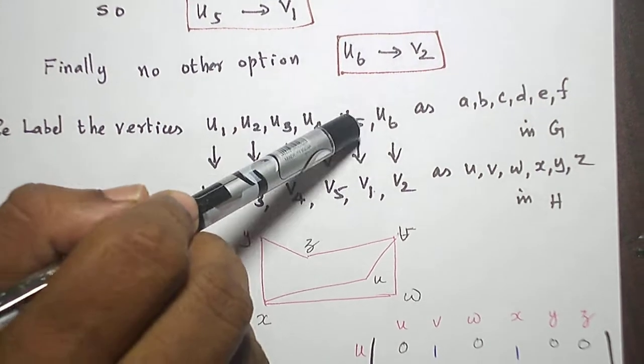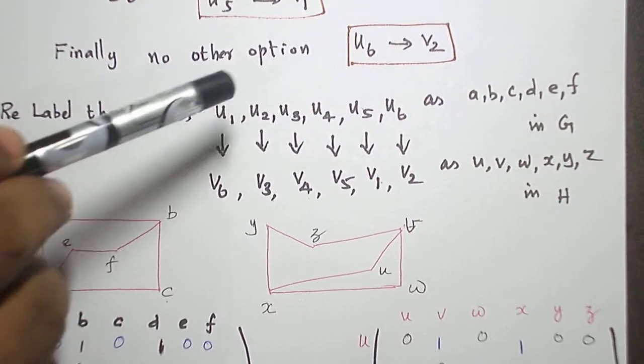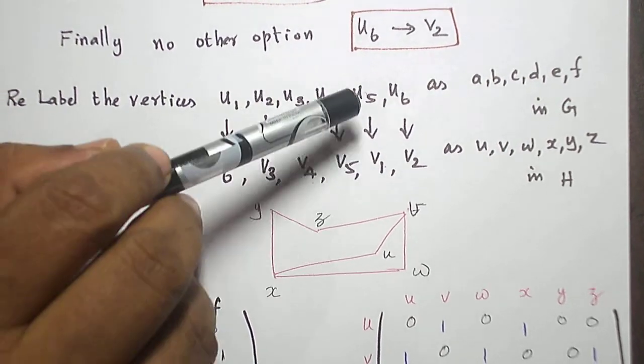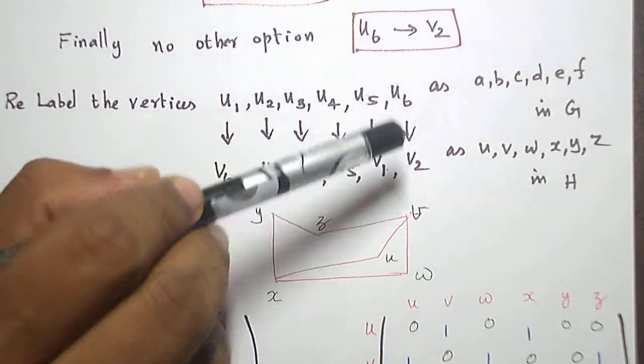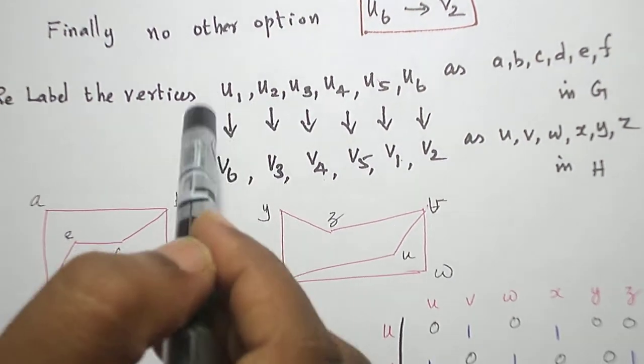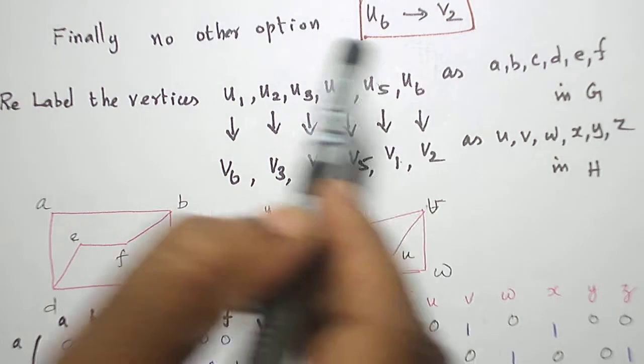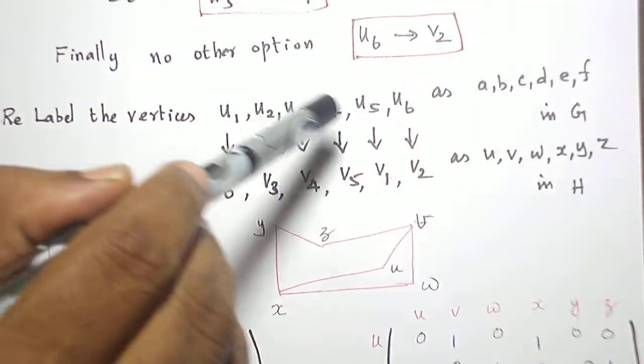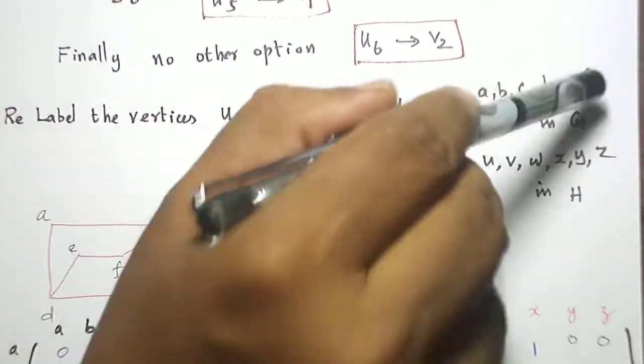All the vertices are mapped: U1 is mapped to V6, U2 mapped to V3, U3 mapped to V4, U4 mapped to V5, U5 mapped to V1, U6 mapped to V2. Now I am going to relabel the vertices in this way: U1 as a, U2 as b, U3 as c, U4 as d, U5 as e, U6 as f.